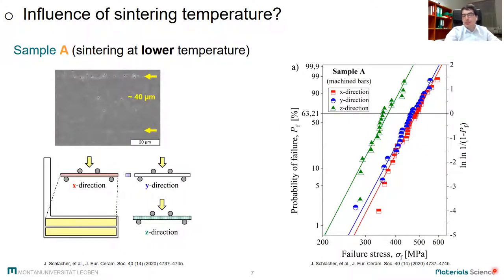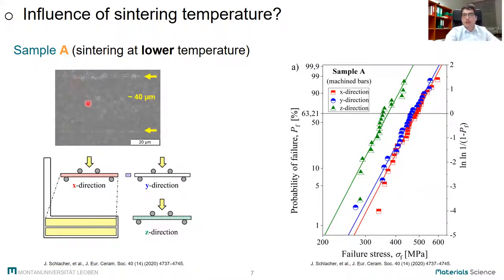For the sample sintered at a lower temperature, there is a clear effect of printing direction x, y, and z on the strength distributions. The characteristic strength in x and y is relatively high, approximately 500 MPa, which can be related to the rather fine-grained microstructure. However, the characteristic strength in z direction is significantly lower than that of the specimens in x and y. In order to understand these findings, we are going to take a look at a few fracture surfaces.